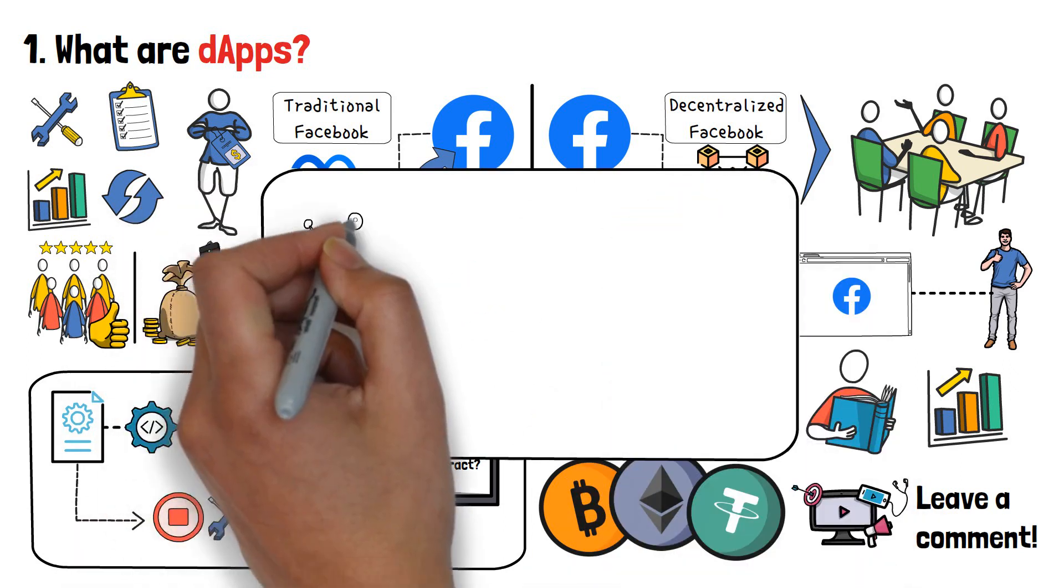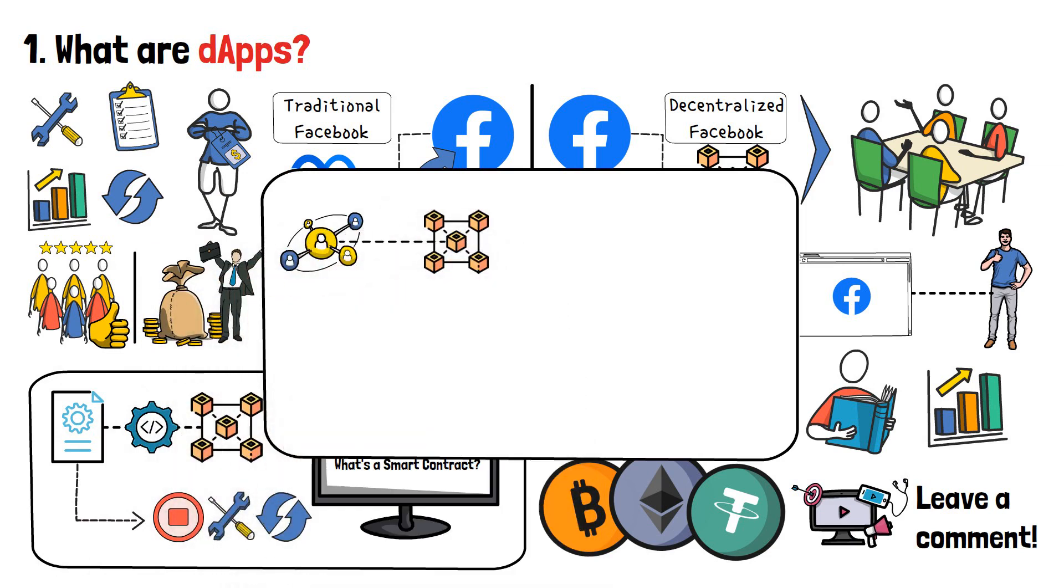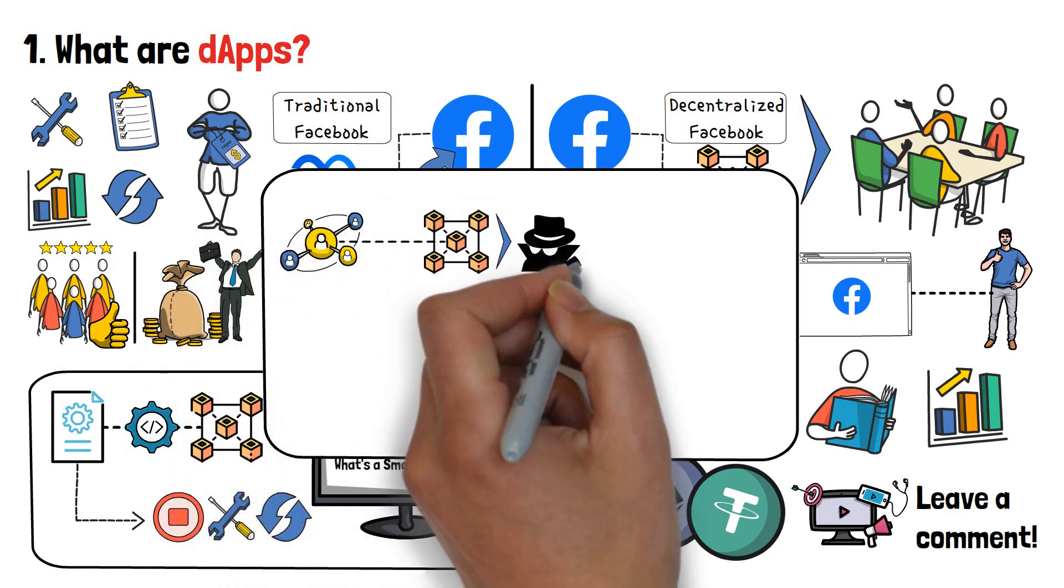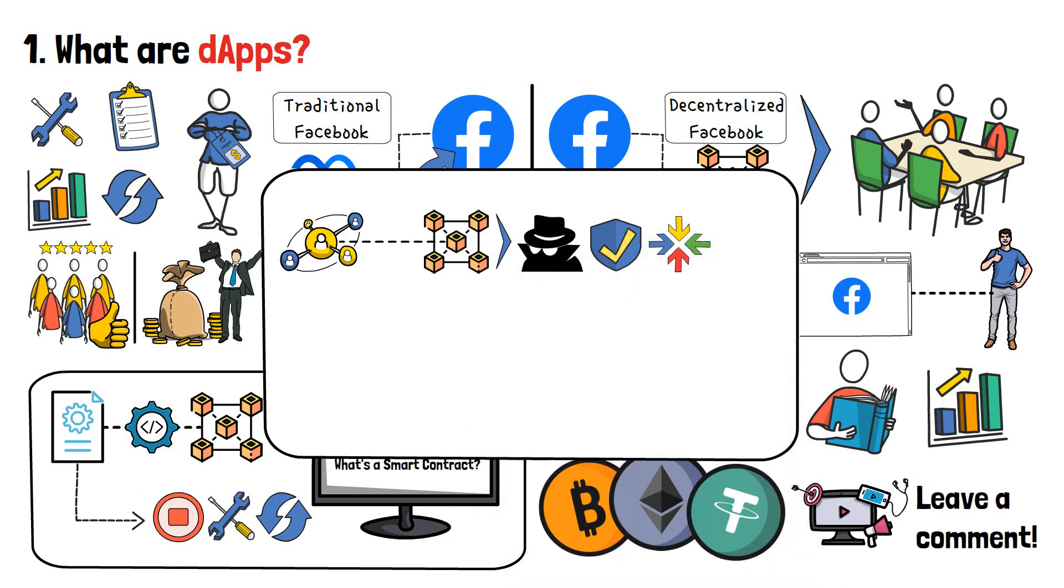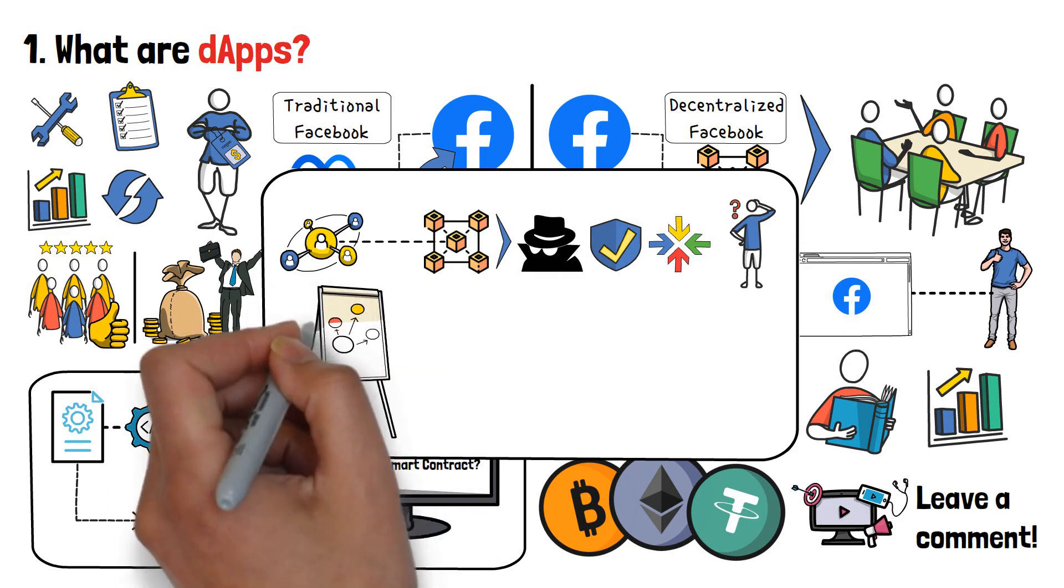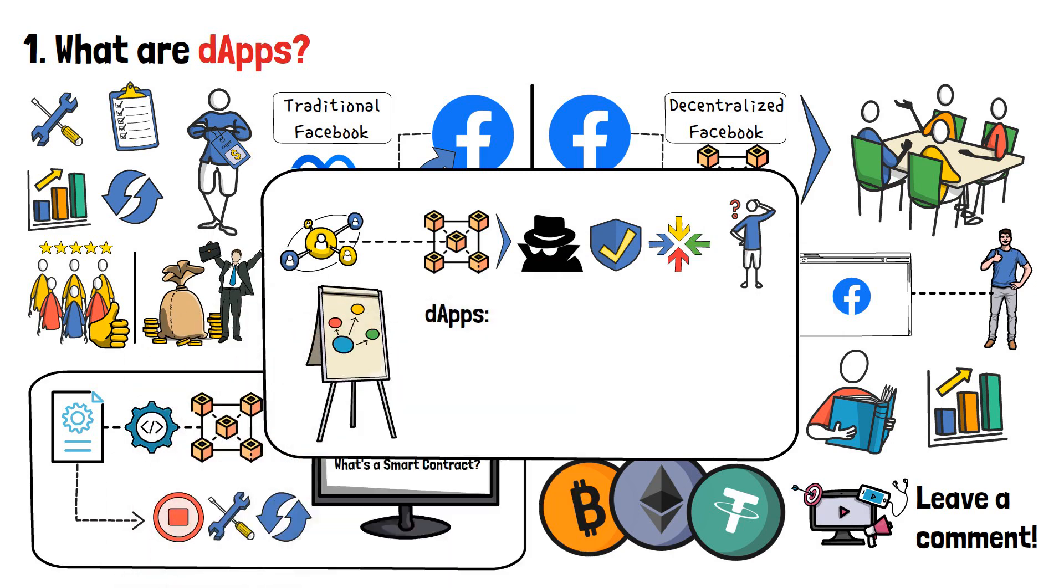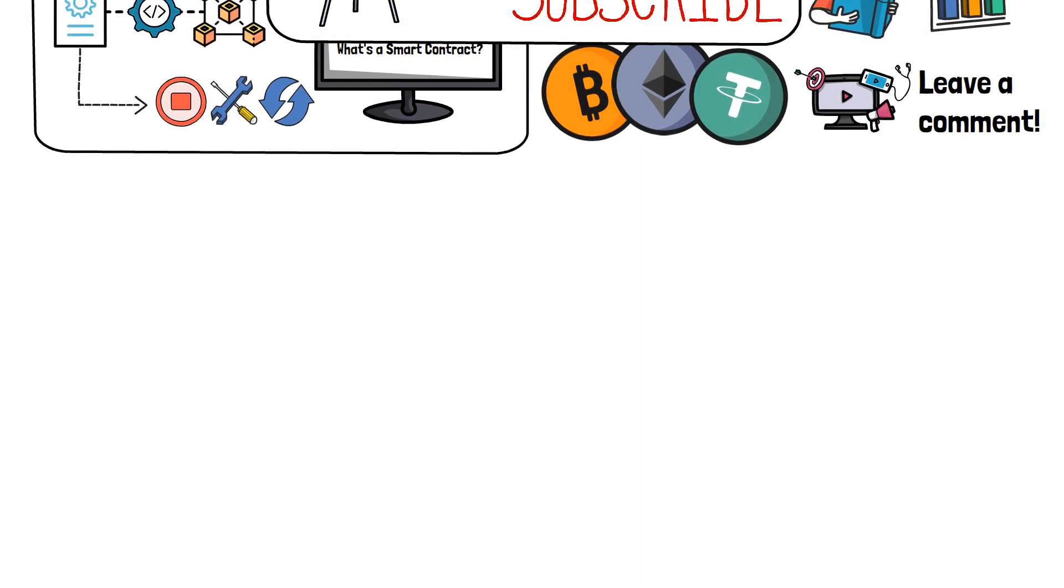Now, we've established that dApps are applications that are based on blockchains, and that allow people to use them anonymously, securely, and without fear of data aggregation. In order for you to get a better understanding of the topic, though, let's take a look at some of the most popular examples of the different types of dApps that are out there. Also, if you're enjoying the video thus far, do give it a like, and subscribe to the channel in order to not miss out on future videos.